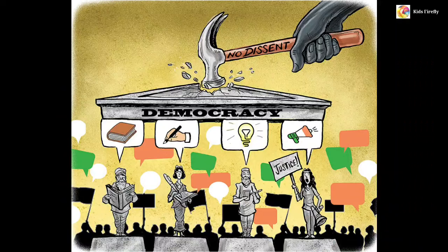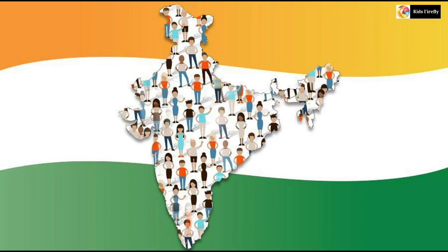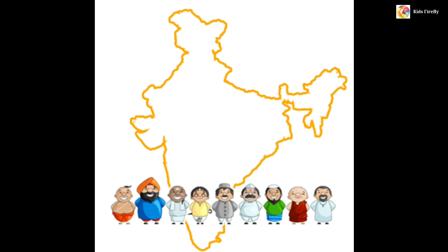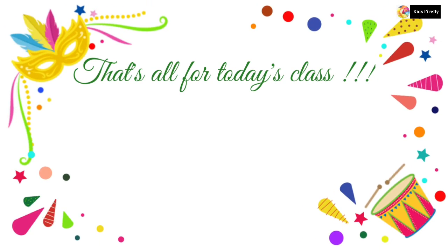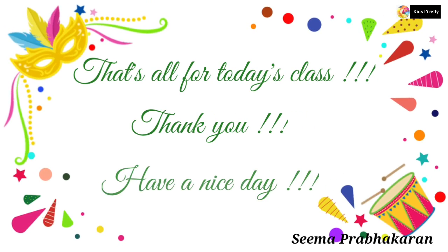They should form groups that put pressure on the government and force it to reconsider its decisions. Citizens of a democracy, especially one as diverse as India, need to develop a spirit of cooperation. This will help them accommodate the diverse elements in the country and ensure the smooth running of the country. That's all for today's class. Thank you and have a nice day.